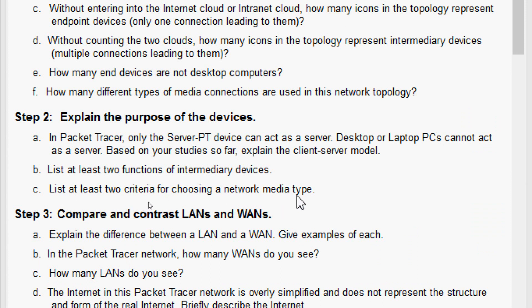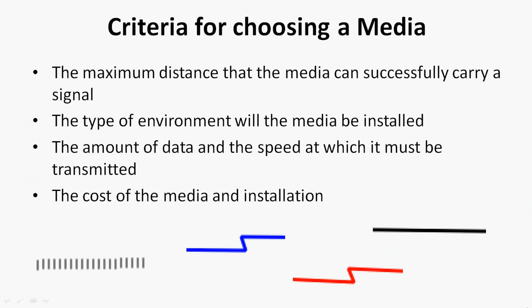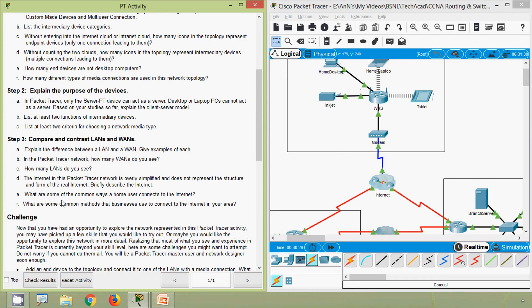Coming to part C, list at least two criteria for choosing a network media type. The criteria include: the maximum distance that the media can successfully carry a signal; the environment in which the media will be installed; the amount of data and the speed at which it must be transmitted; and the cost of the media and installation.